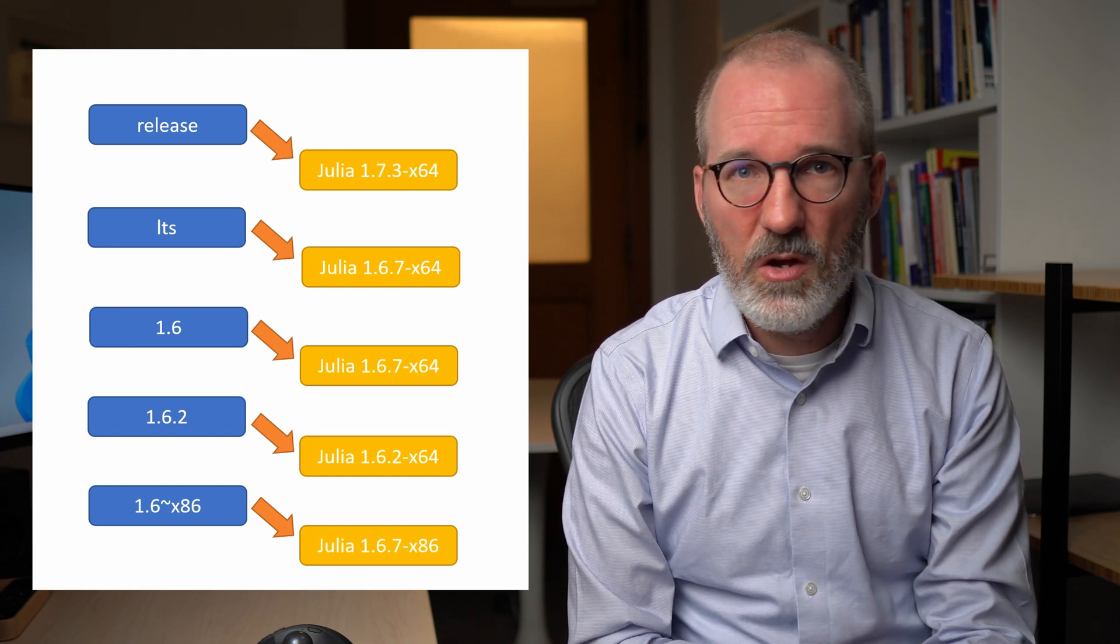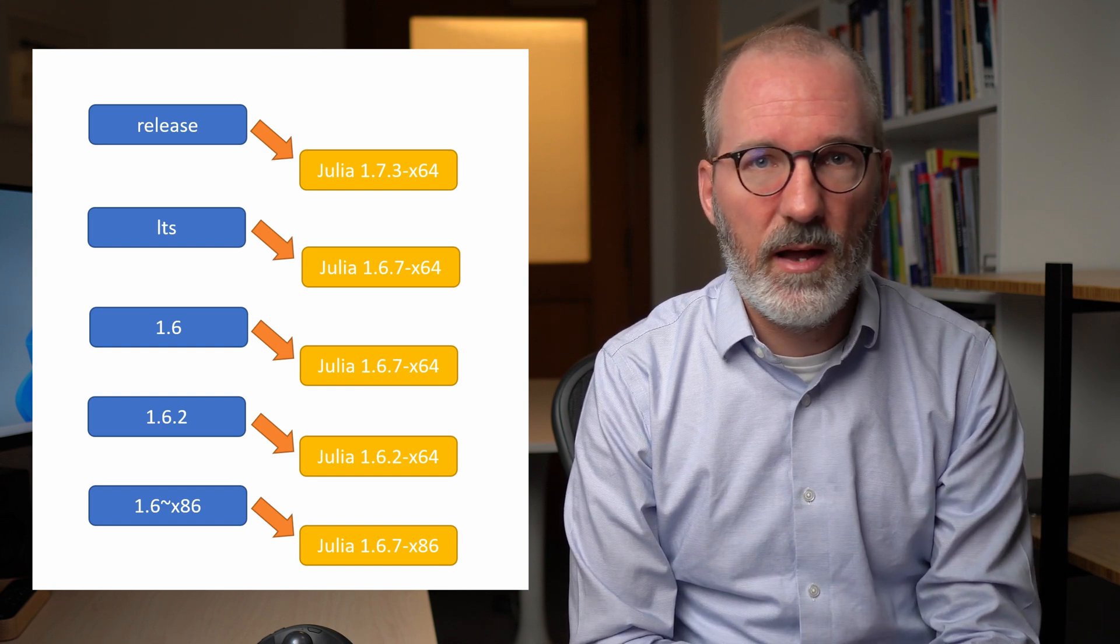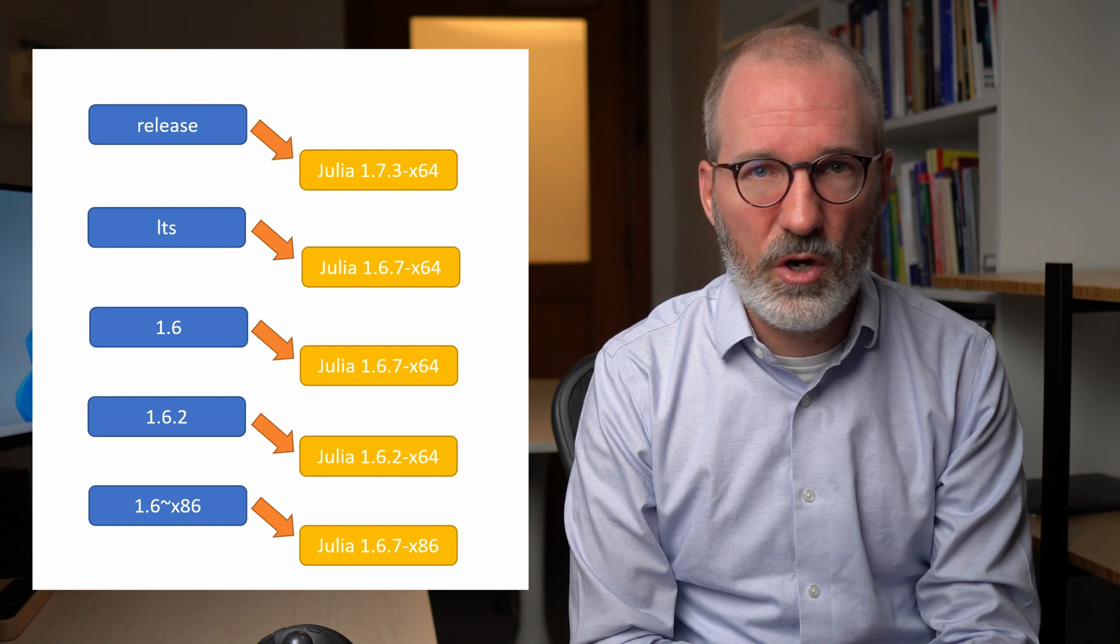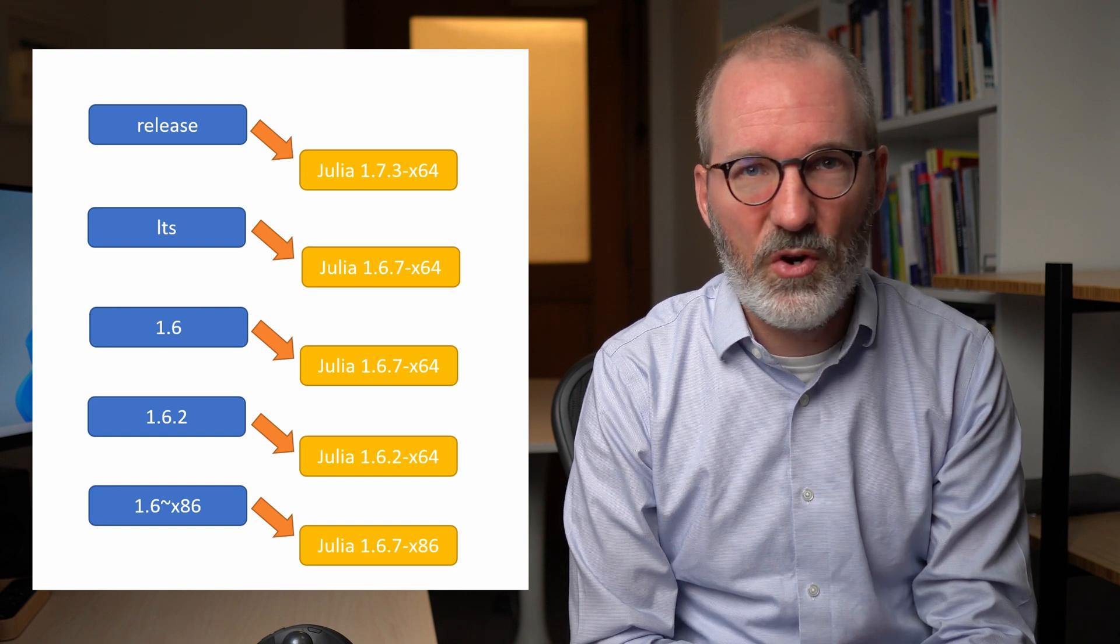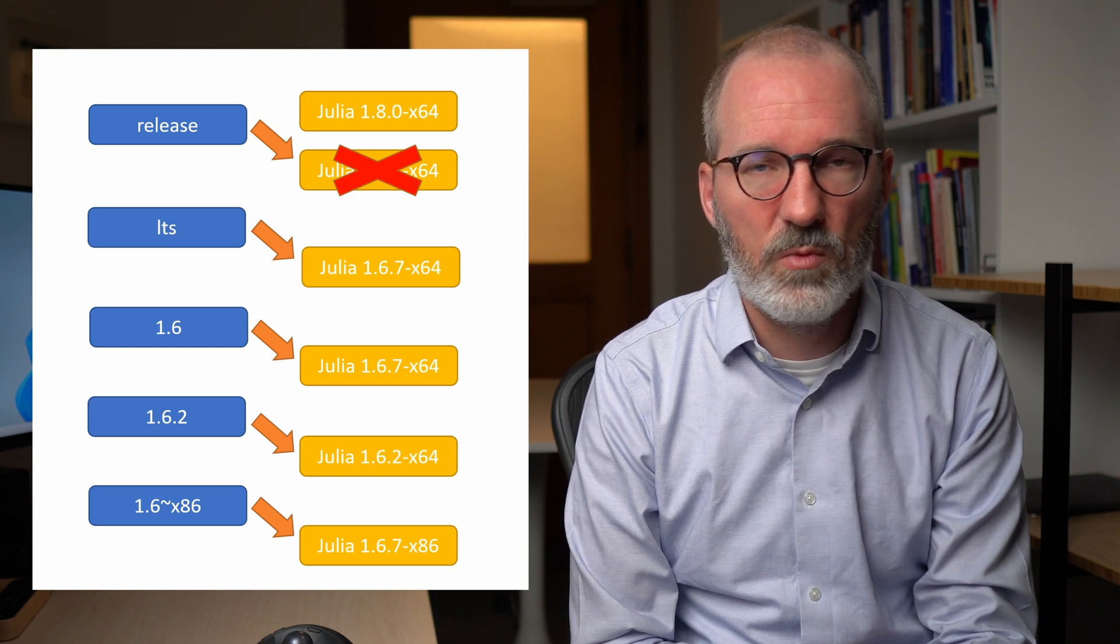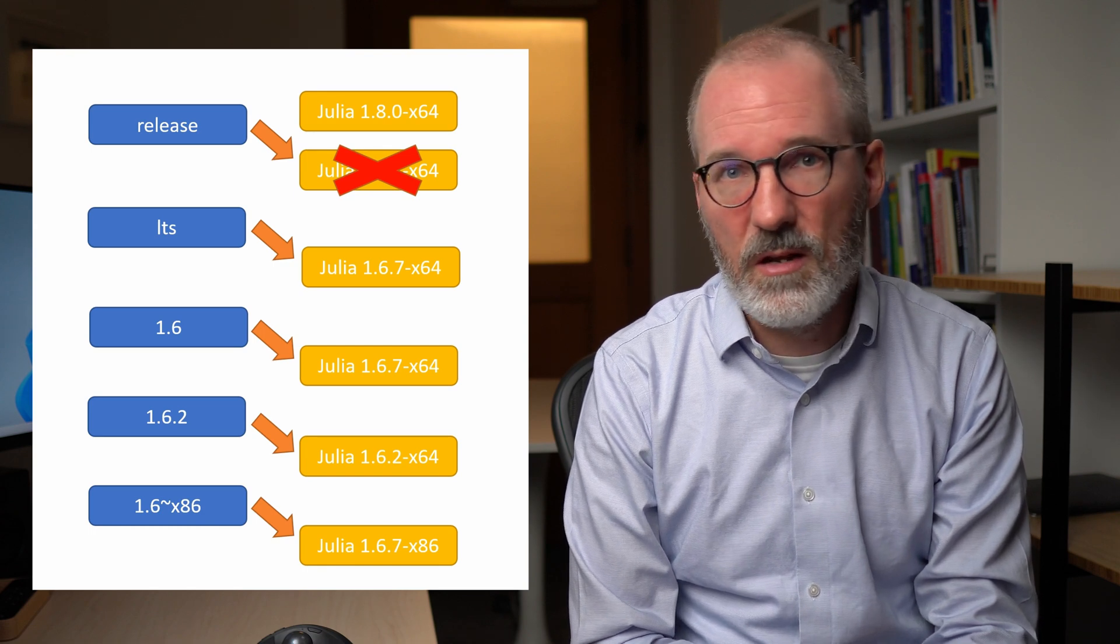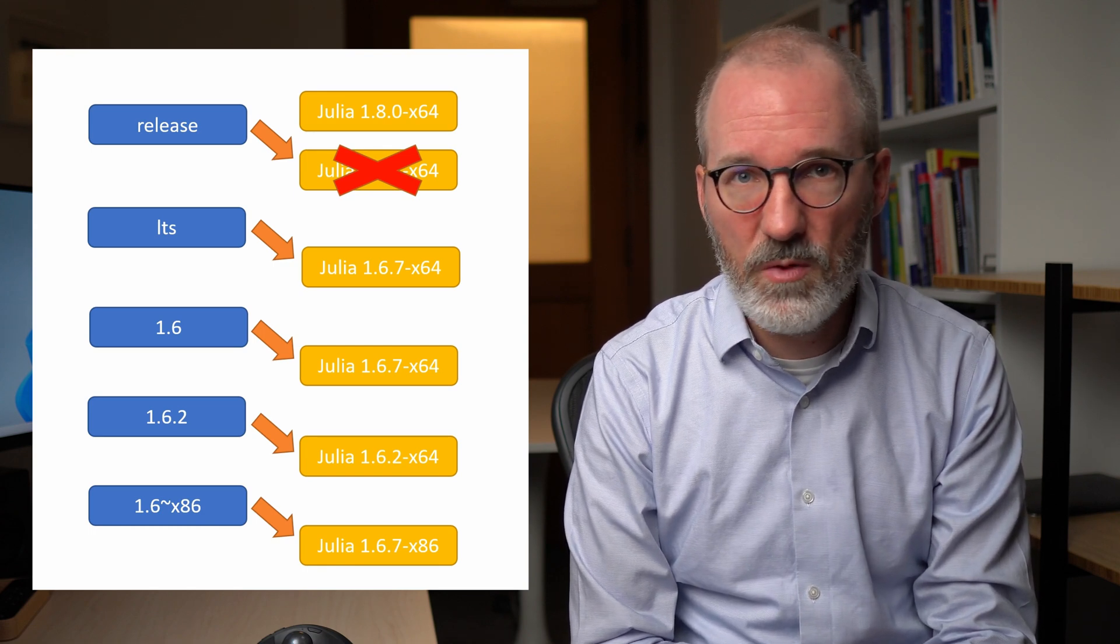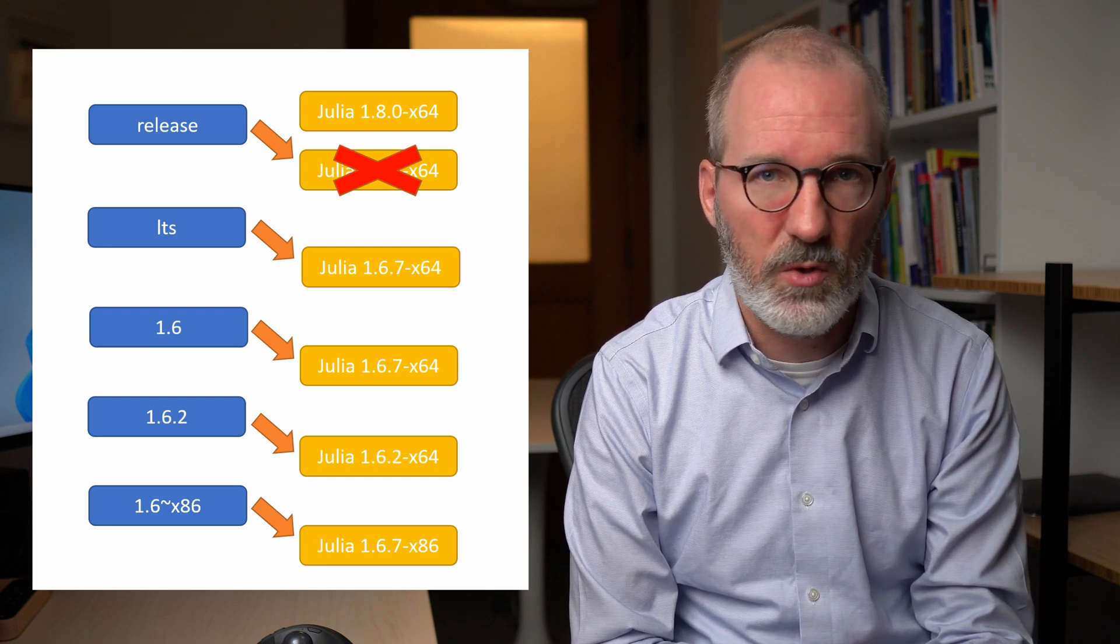JuliaUp always knows what the latest version for each channel is and if there's a new Julia release and you currently, for example, have the release channel installed and then there is a new Julia version that is now the current version in this channel. Then JuliaUp will prompt you and helpfully instruct you how you can, with one command, update your Julia installation so that you actually get the latest build in, say, the release channel. It will never do this automatically. You will always have to opt in. It will only just inform you about new versions and tell you how you can update.